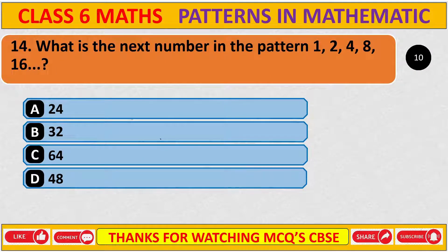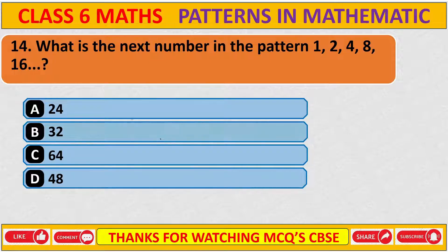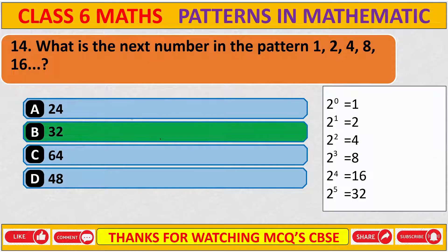What is the next number in the pattern 1, 2, 4, 8, and 16? The correct answer is B: 32. This is the power of 2 pattern.